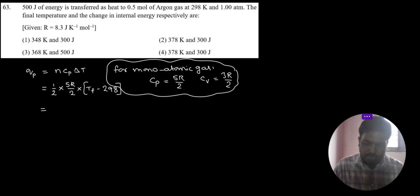So if we simplify, we will get Tf value. Qp value how much given? 500 Joule. So 500 Joule is equal to 5 by 4 into R value 8.3 into final temperature minus initial temperature 298 Kelvin.